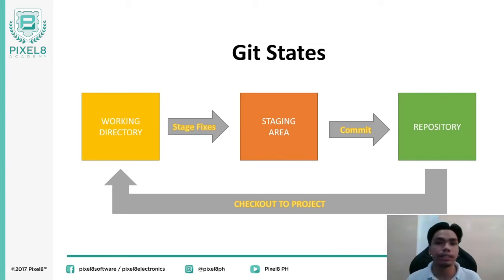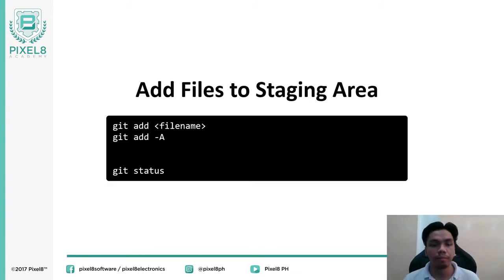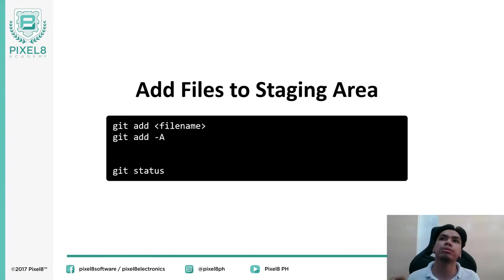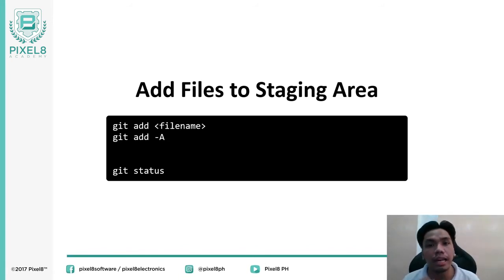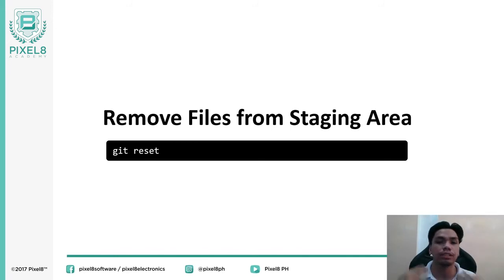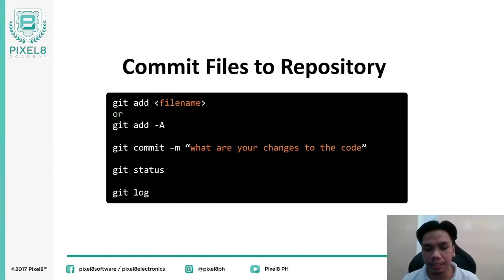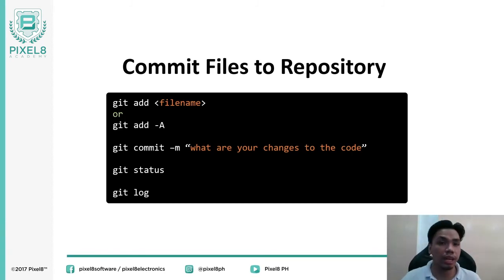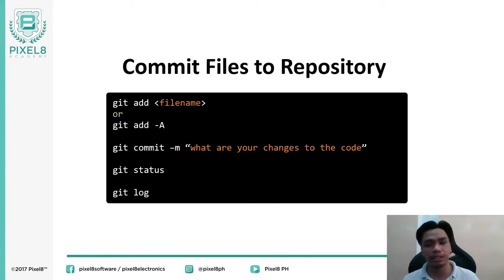To add files to the staging area, type git add followed by the file name. To stage all files at once, use git add -a. Check the status of your staging area with git status. To remove files from the staging area, type git reset, which resets it so you can apply new changes. After staging, commit your files to the repository by typing git commit -m followed by your commit message describing your changes.